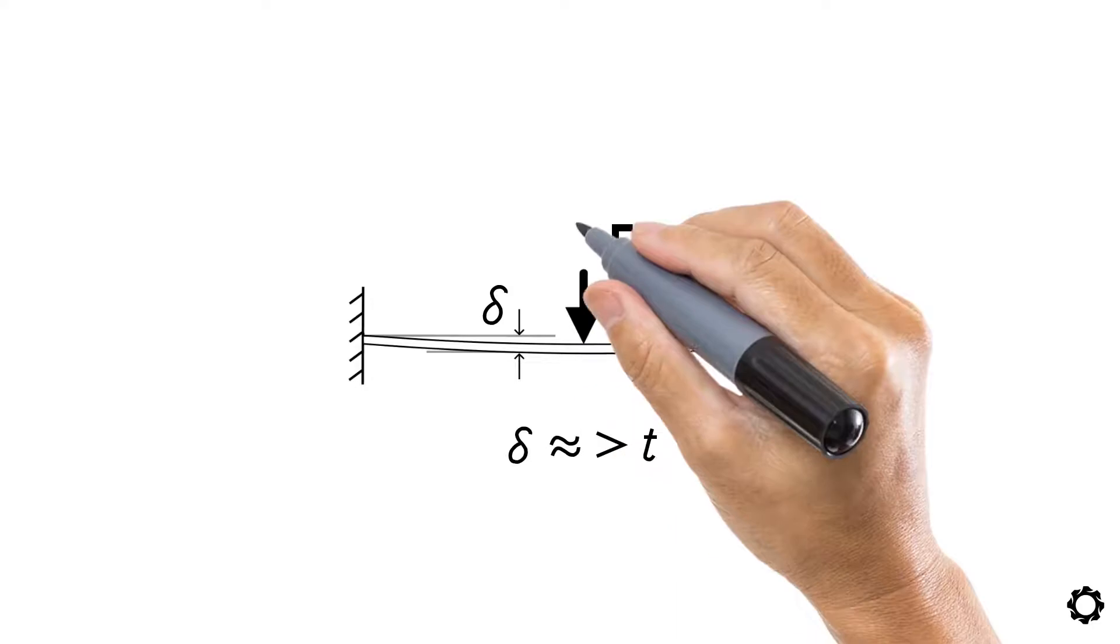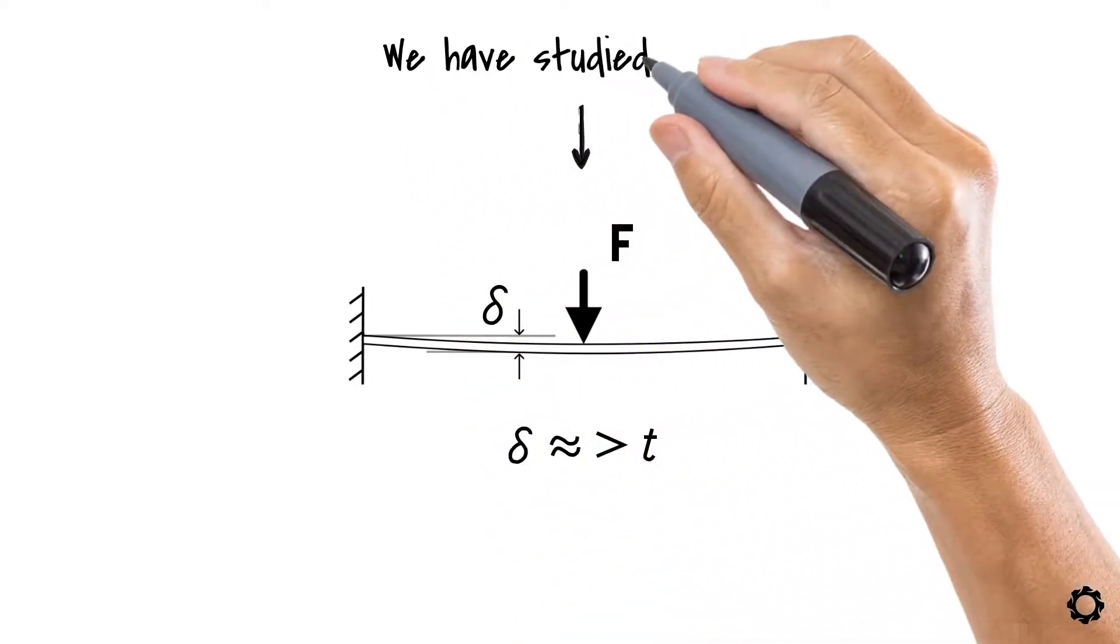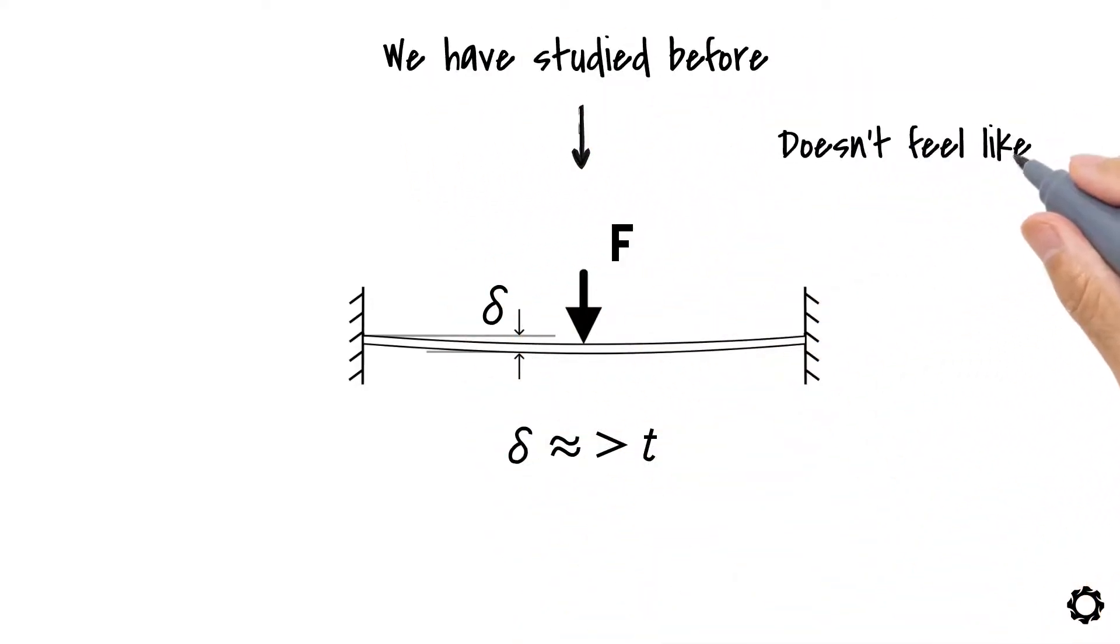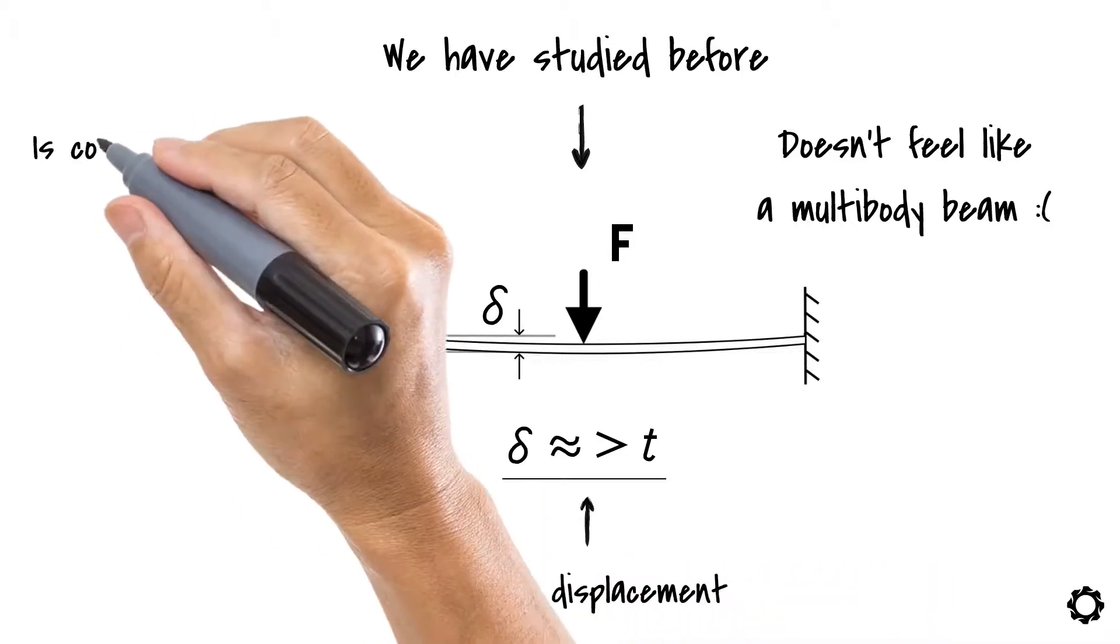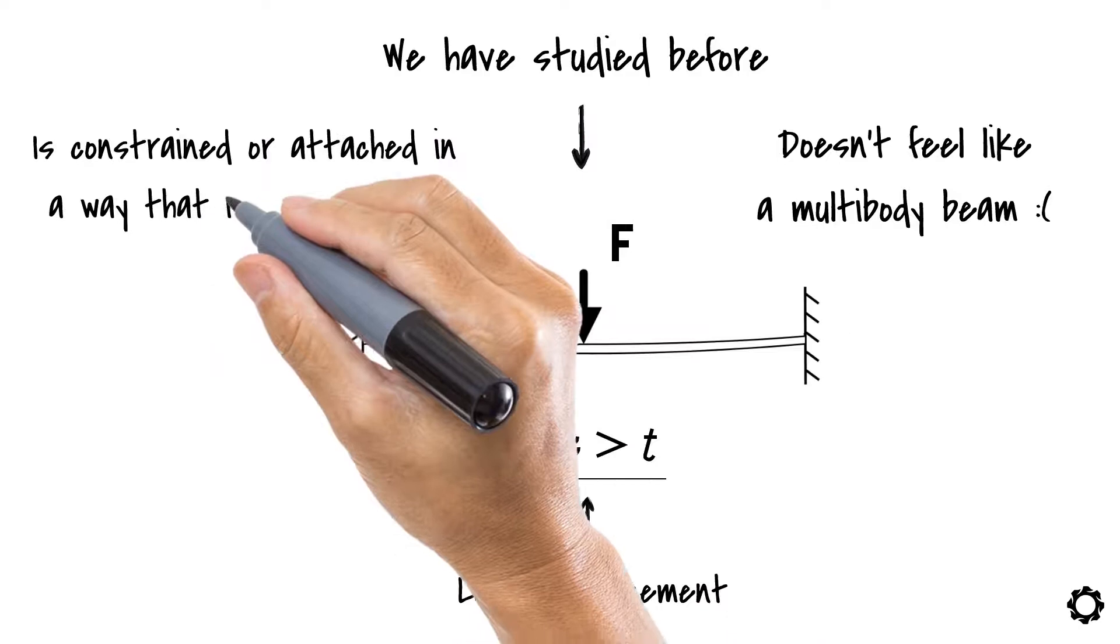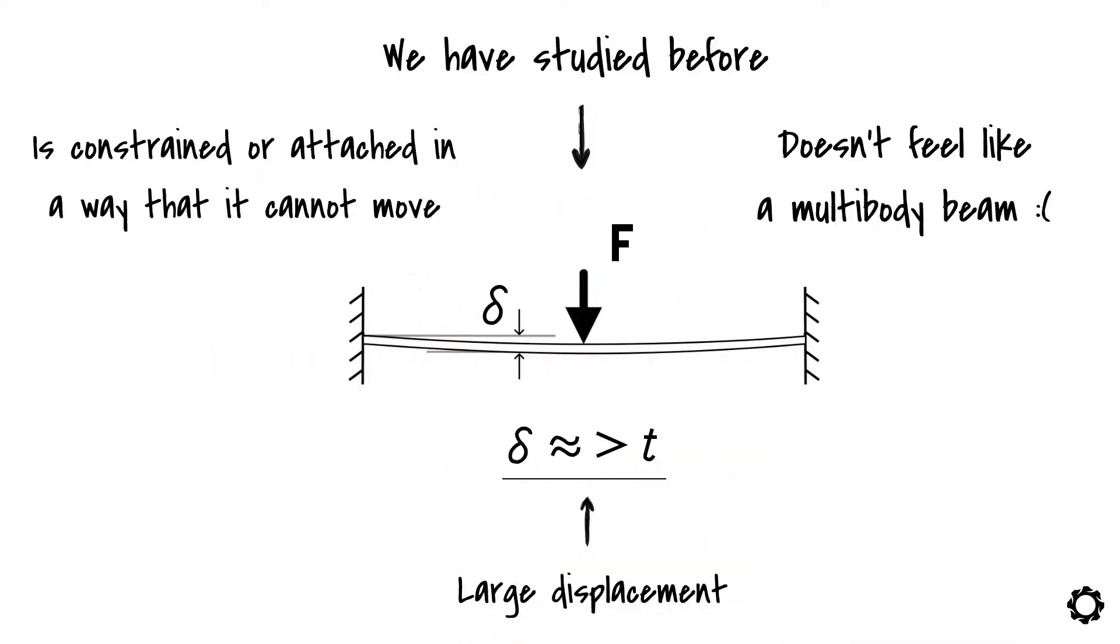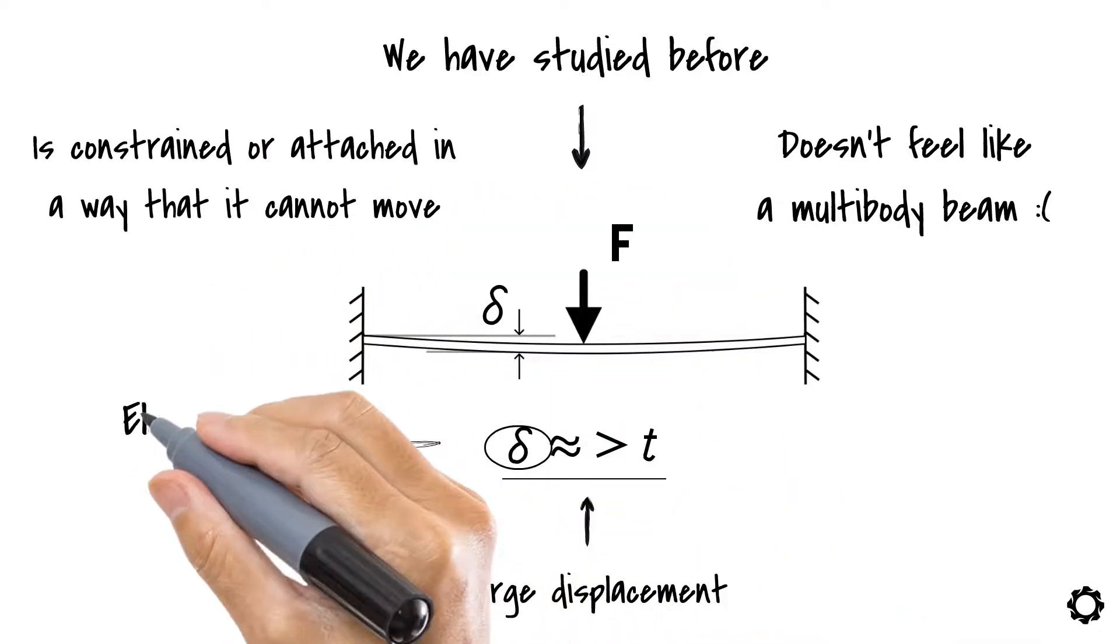But wait, this is a beam that we have studied before. This doesn't feel like a multibody beam. Yes, you are right. Nevertheless, what we have just said is indeed a definition of a large displacement and yes, the beam is constrained or attached in a way that it cannot move. So basically this displacement could be an elastic deformation.